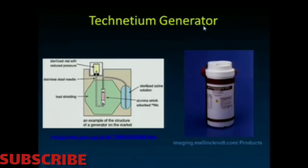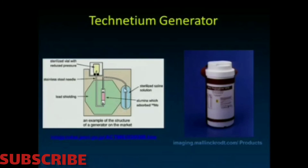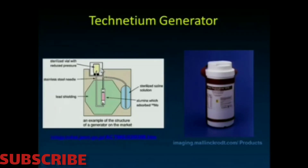We can get technetium fairly readily using a molybdenum generator. Here, alumina is loaded with molybdenum-99, and as it decays to technetium, the technetium becomes water-soluble. A sterilized saline solution is connected through that column via tubing, and if you place an evacuated vial onto the needle at the top, it sucks the fluid past the column, taking off the soluble technetium into your vial — hopefully with minimal breakthrough of molybdenum.